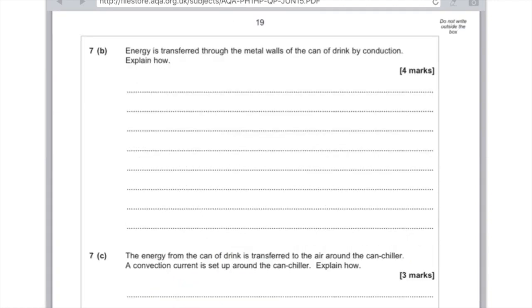Energy is transferred through the metal walls of the can of drink by conduction. Explain how for four marks. State that metals have free electrons, they gain kinetic energy, and transfer kinetic energy to other electrons by collision. So mention free electrons, gain kinetic energy, transfer energy to other electrons, by collision. Learn that please.